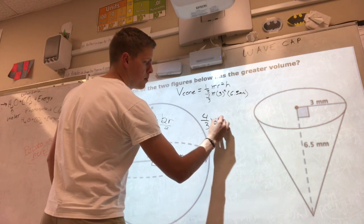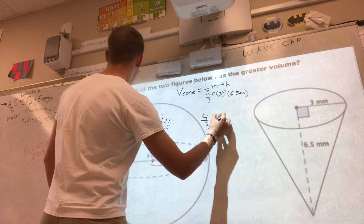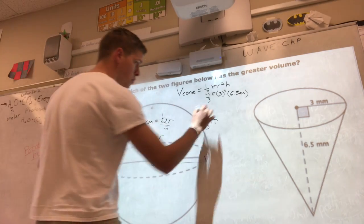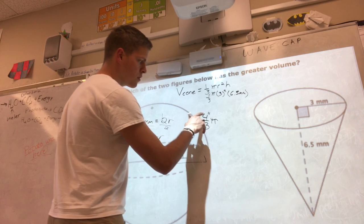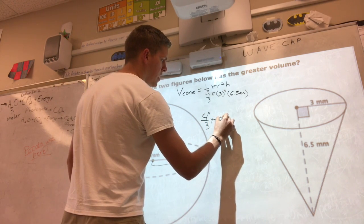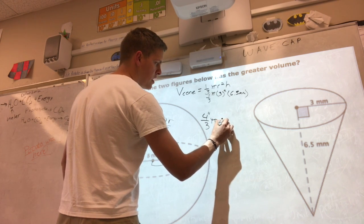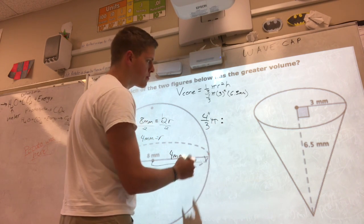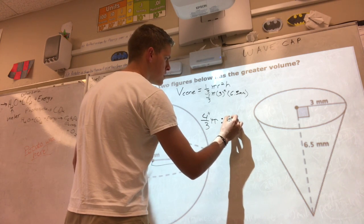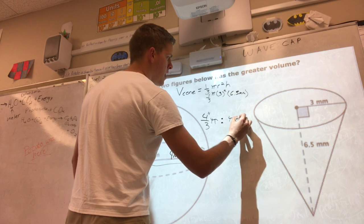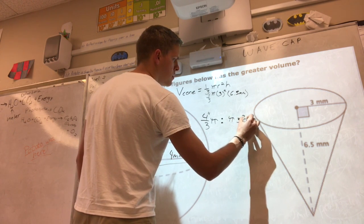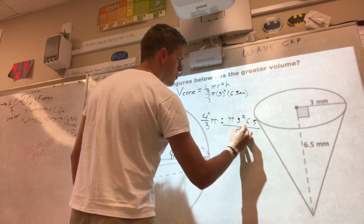4/3 pi times 4 cubed, which is just going to be times 4 again, so 4 to the 4. 4 to the 4 over 3 times pi. And we don't know if it's greater than or equal to, so I'm just going to put a colon for now, because we know they're probably not going to be equal.